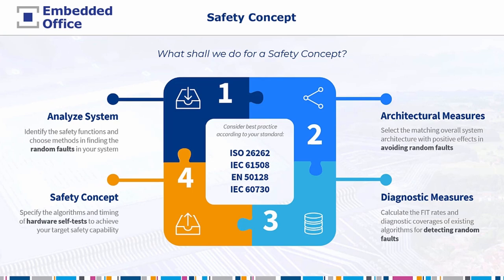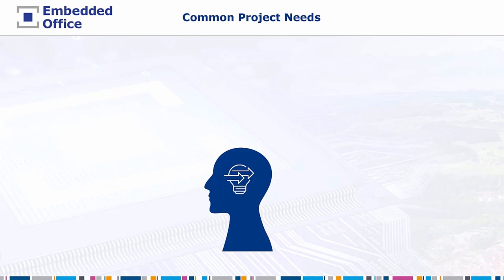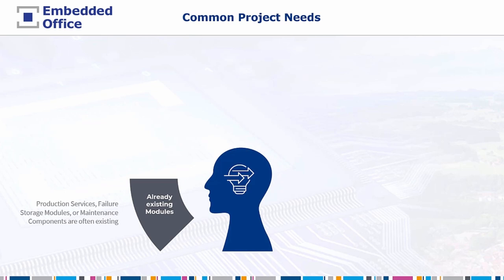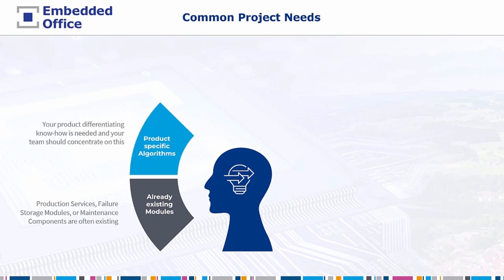This is not done strictly step by step — these activities influence each other, leading to a continuous improvement process that stops when we reach our safety goals. A parallel task to writing the safety concept is capturing the project needs. Most of the time we have existing modules we want to use — for example, end-of-line production services, failure storage modules, or maintenance components from previous or similar projects. The essential part, the reason why we start the development, includes the product-specific algorithms and your differentiating know-how, which builds the core of the specific application. Your team should concentrate on this part.